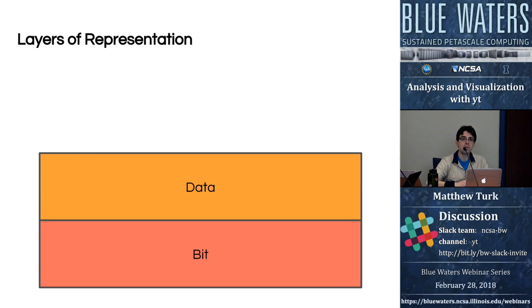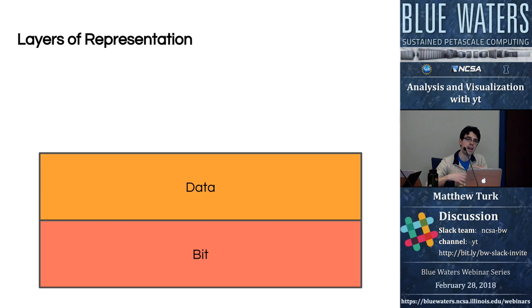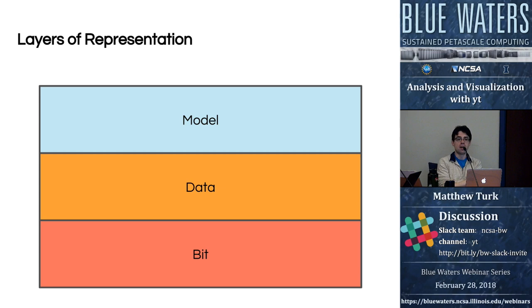The next level up we can think about data as being a layer of representation. In this case, where we've translated from bits, we've now translated those into arrays that correspond to physical or non-physical quantities in some type of a system.